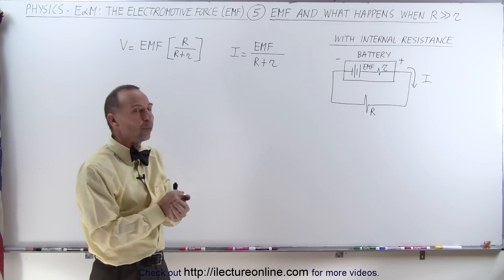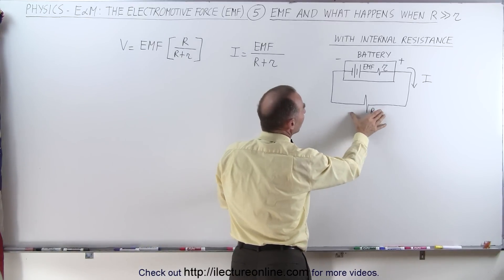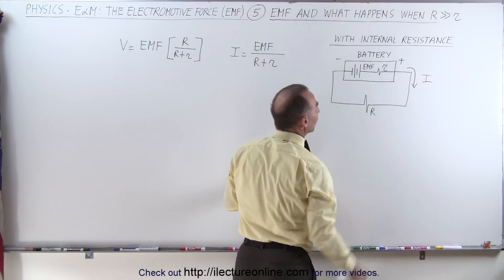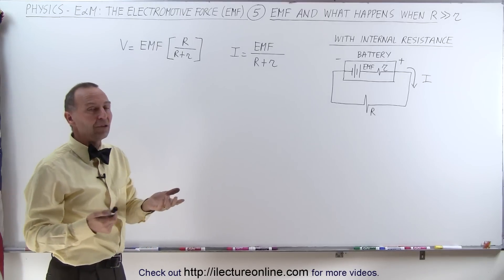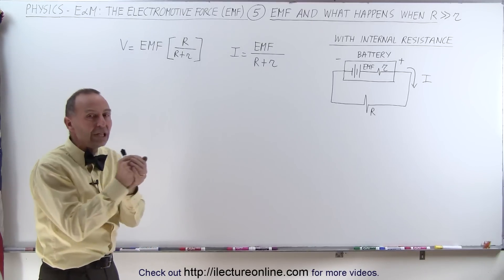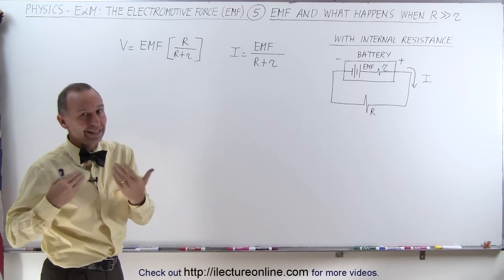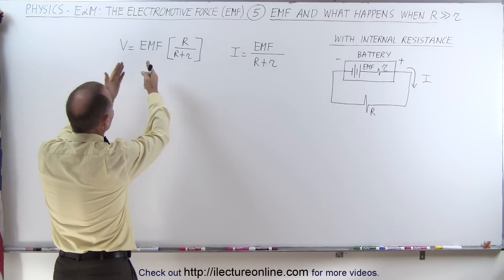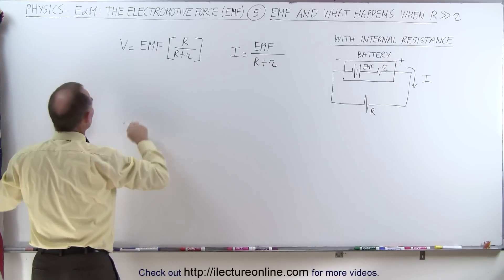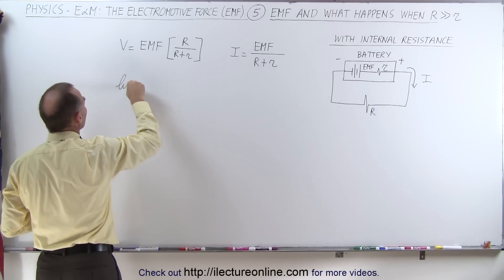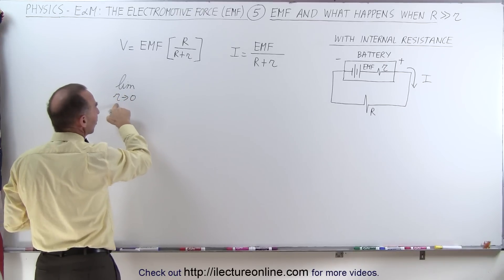Now the question is: what happens when the resistance of the circuit becomes much much larger compared to the internal resistance of the battery? One way to establish that is to let r become really small. In the limit as r goes to zero — when it becomes insignificant — what happens to the voltage relative to the emf, and what happens to the current in the circuit? So we're going to take the limit as r goes to zero, where r is the internal resistance of the battery.